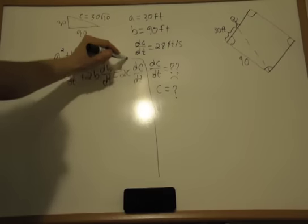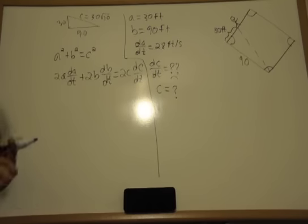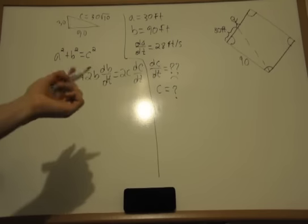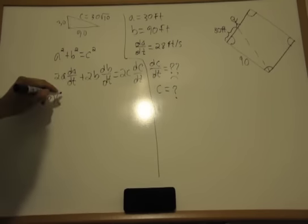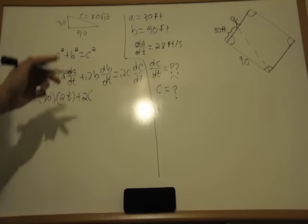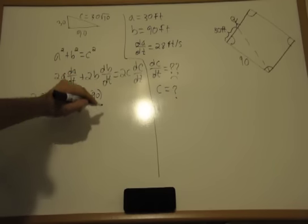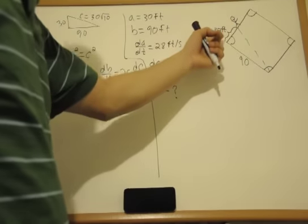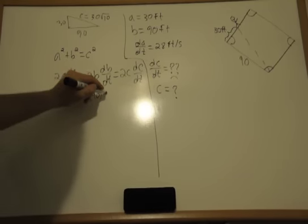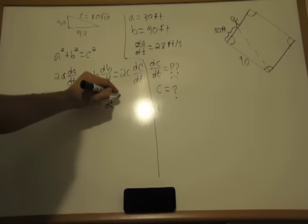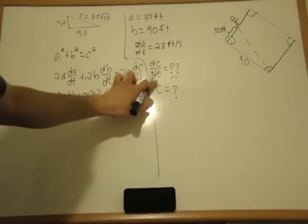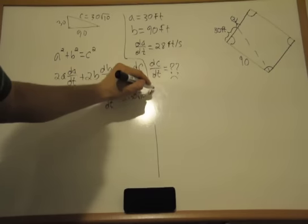Okay, then just block that off. Now we can start plugging in what we know. So we know a, which is 30. We know da/dt, which is 28 feet per second as the problem stated. Plus 2, and b is equal to 90. And b is not changing. So obviously, as he's running to 3rd base and he gets to 30, b is not changing. Equal to 2c is 30 radical 10, times dc/dt.